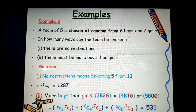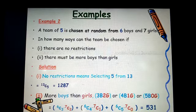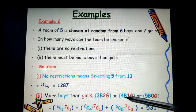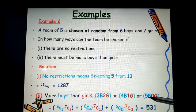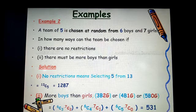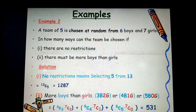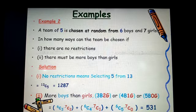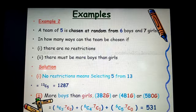Now, there must be more boys than girls. So, what are the possible options? The first can be 3 boys, 2 girls, 4 boys, 1 girl, 5 boys, 0 girls. Now, this gives us 6 combination 3 times 7 combination 2 plus 6 combination 4 times 7 combination 1 plus 6 combination 5 times 7 combination 0. So, that is 531.